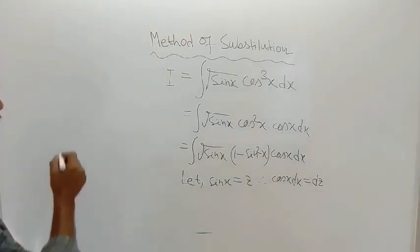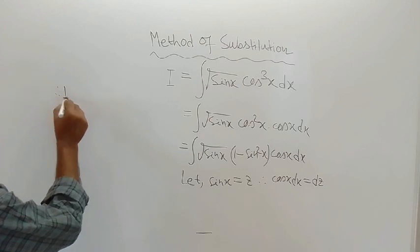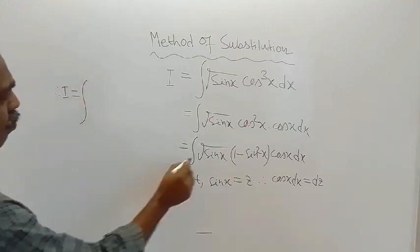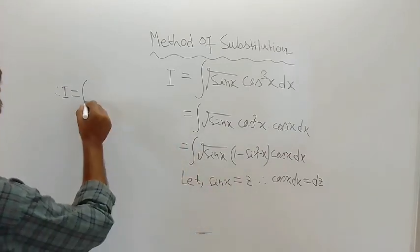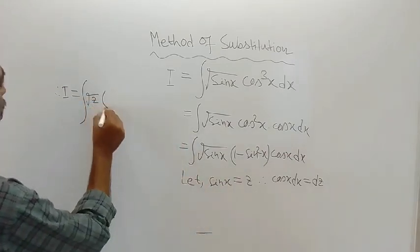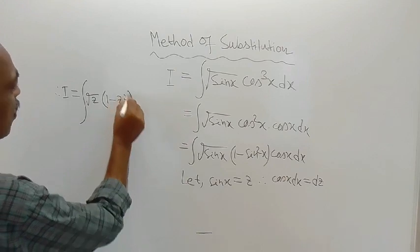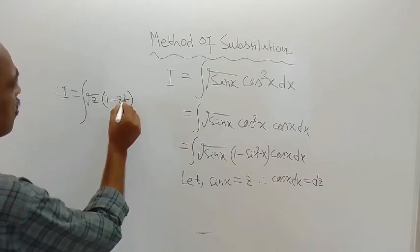Here I am showing the same thing. Therefore, integration I, this is equal to, from this line we are writing, root over of sin x is there, that means root z. Root z is there, into 1 minus z square.